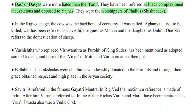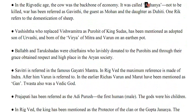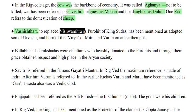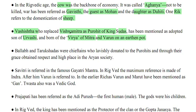In the Rigvedic age, the cow was the backbone of the economy and was called Aghanya — not to be killed. War has been referred to as Gavisthi, the guest as Mohan, and the daughter as Duhiti. Vashist, who replaced Vishwamitra as Purohit of King Sudhaz, has been mentioned as the adopted son of Urvashi and born of the Vire of Mitra and Varun on an earthen spot.